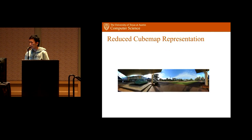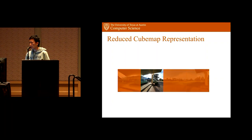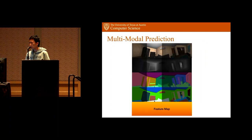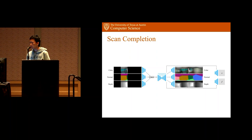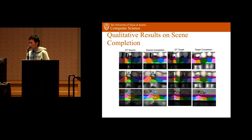For completion, we adopt a reduced cubemap representation with left, front, back, and right views. Given an observed front view, we complete the remaining three views. We complete multiple modalities: color image, depth map, normal maps, semantic map, and pre-trained feature map. Using an encoder-decoder structure with unshared layers for modality-specific features that are then concatenated, our completion model gives meaningful extrapolations.